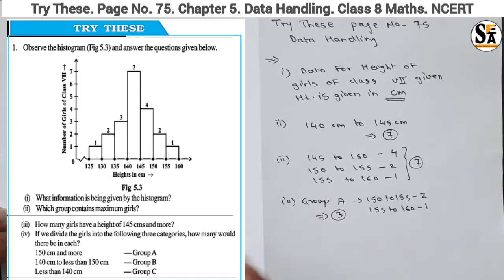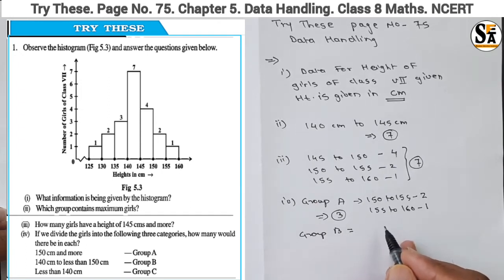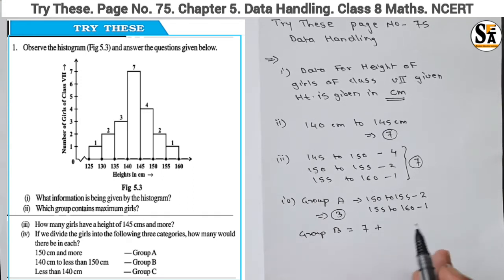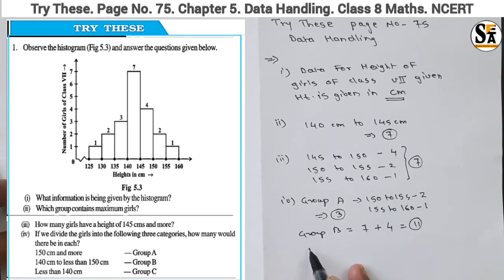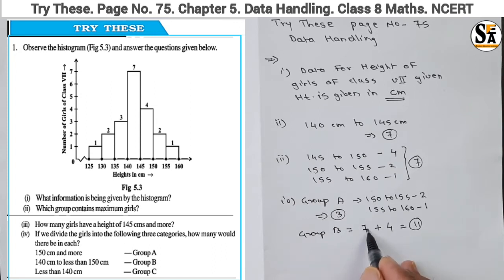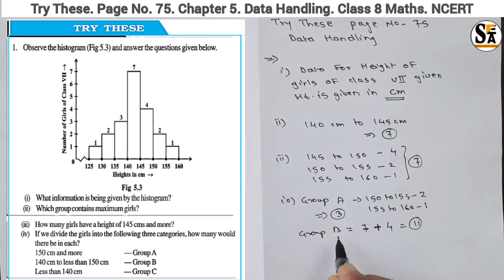For Group B, the range is 140 centimeters to less than 150 centimeters. There are two intervals here: from 140 to 145 centimeters there are 7 girls, and from 145 to 150 centimeters there are 4 girls. So the total for Group B is 7 plus 4, which equals 11 girls.